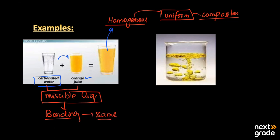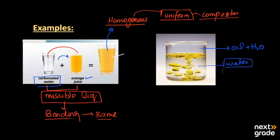The bonding between carbonated water and orange juice is the same, so their particles interact with one another and dissolve into each other, forming a solution. On the other hand, when we have oil plus water, you can see that the oil particles and water particles remain separate from each other — meaning both are not soluble into each other, so these are known as immiscible liquids.